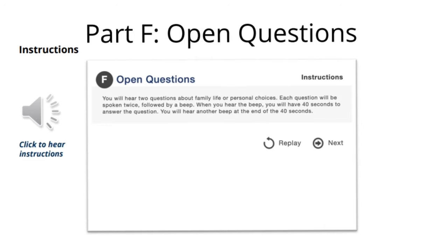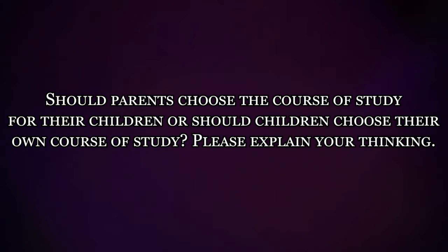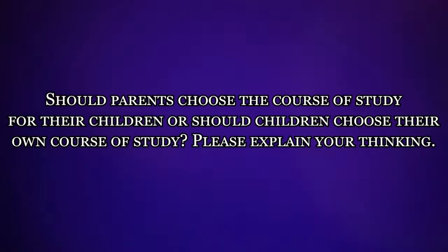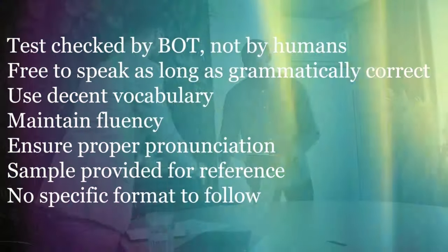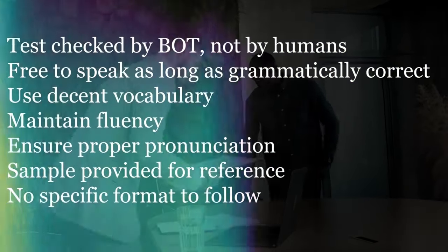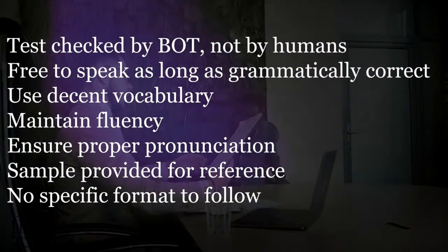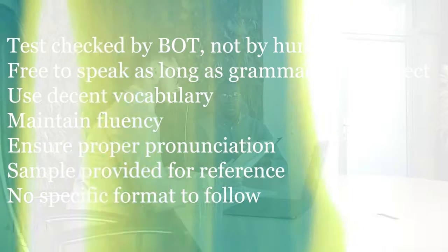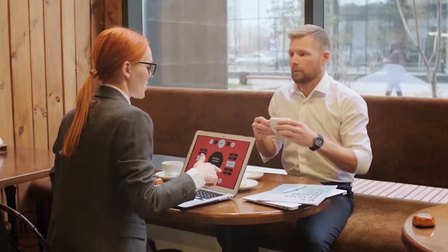Now let's move on to our last section: Part F, Open Questions. This is basically a free speech round where you have to share your opinions on a given topic for at least 40 seconds. You will hear two questions about your personal life or personal choices. Each question will be spoken twice followed by a beep. When you hear the beep, you will have 40 seconds to answer the question. At the end of 40 seconds, you will hear another beep and another question. Let me share a simple question: 'Should parents choose the course of study for their children, or should children choose their own course of study? Please explain your thinking.' The test will be checked by a bot, so you are free to say anything as long as you are grammatically correct, using decent vocabulary, fluent, and your pronunciation is up to the mark.